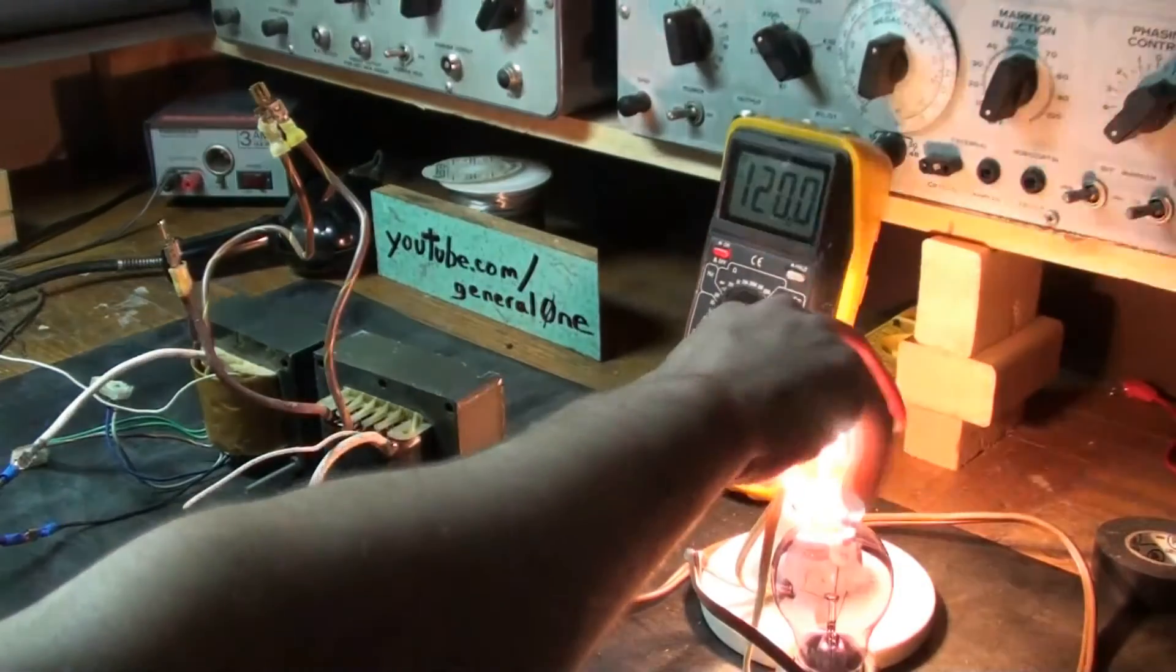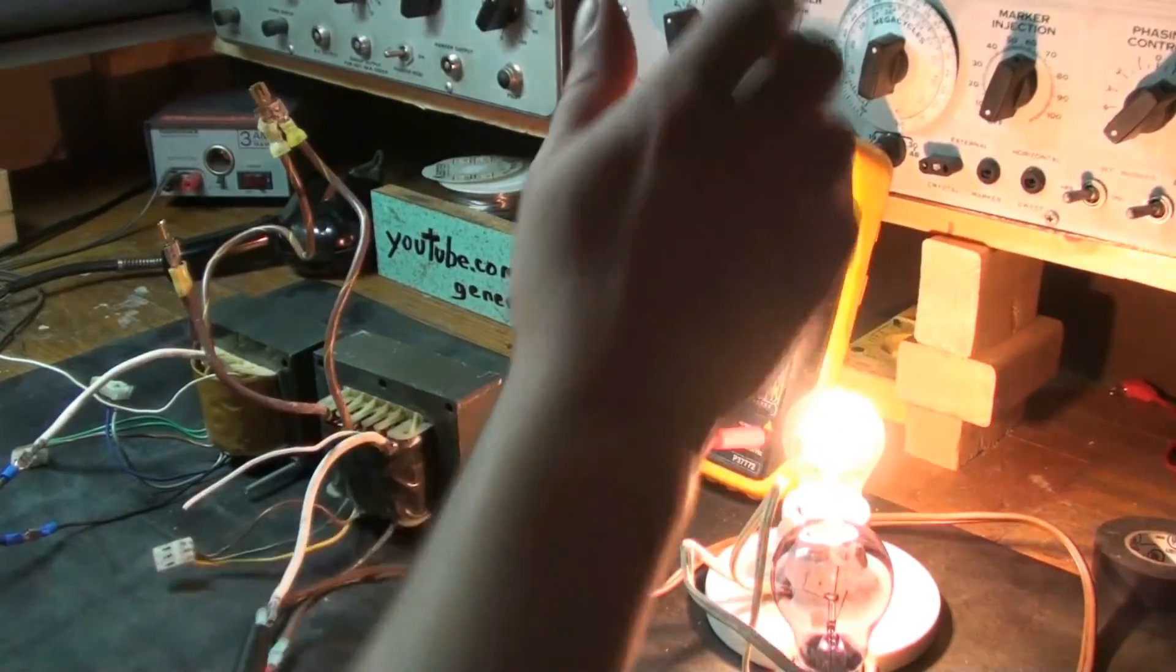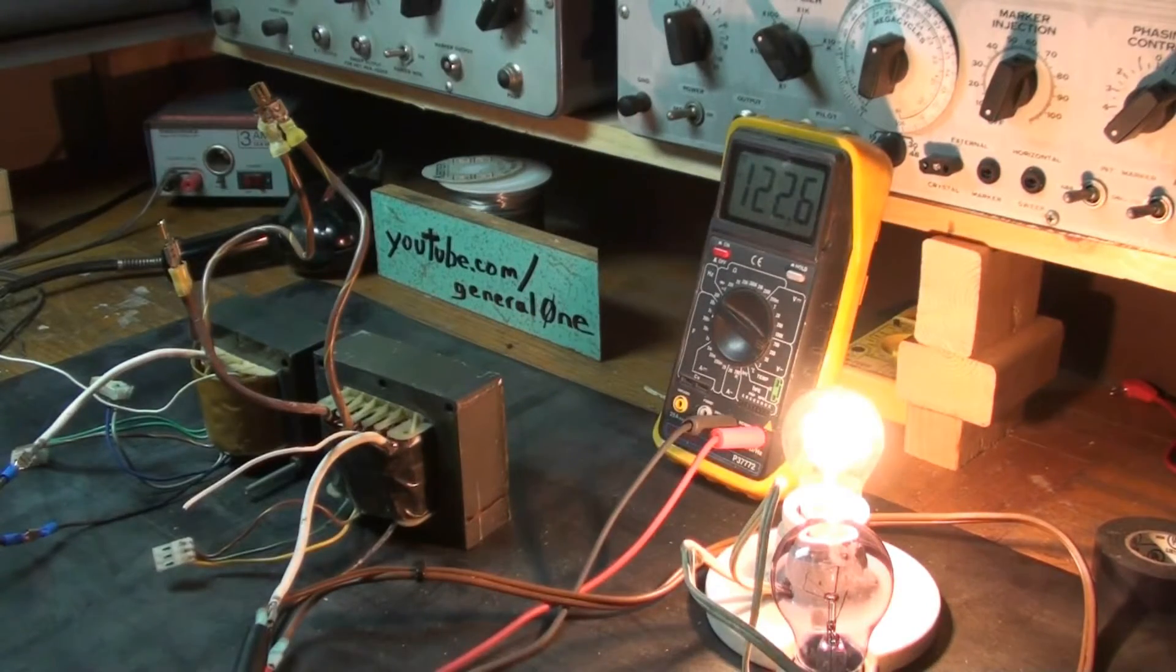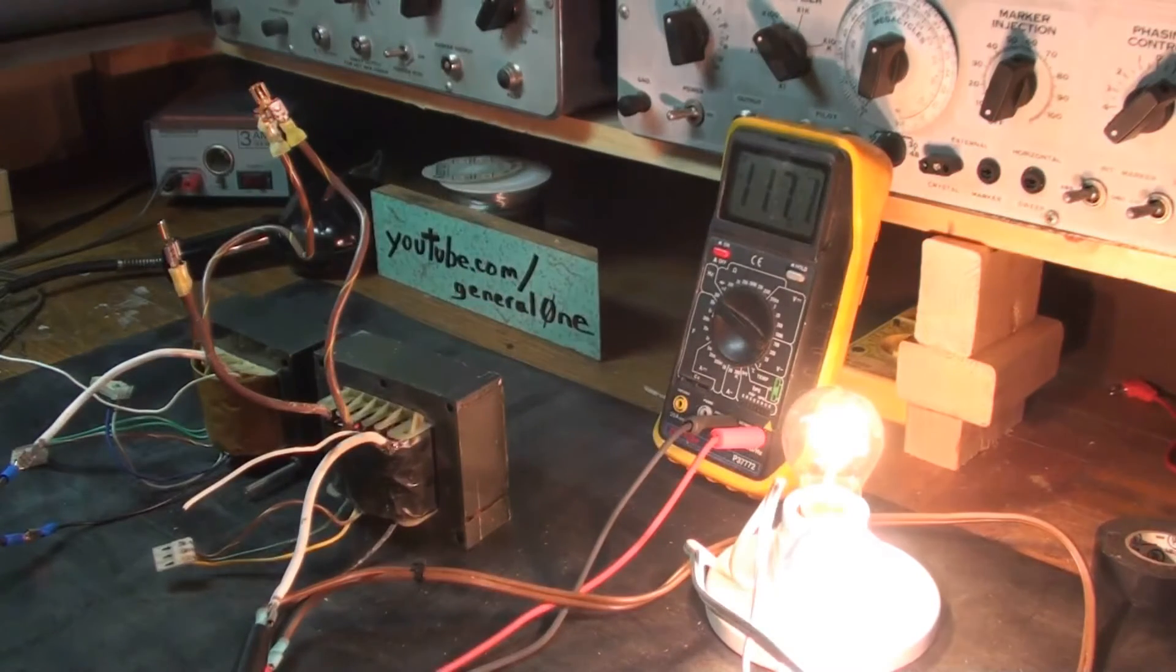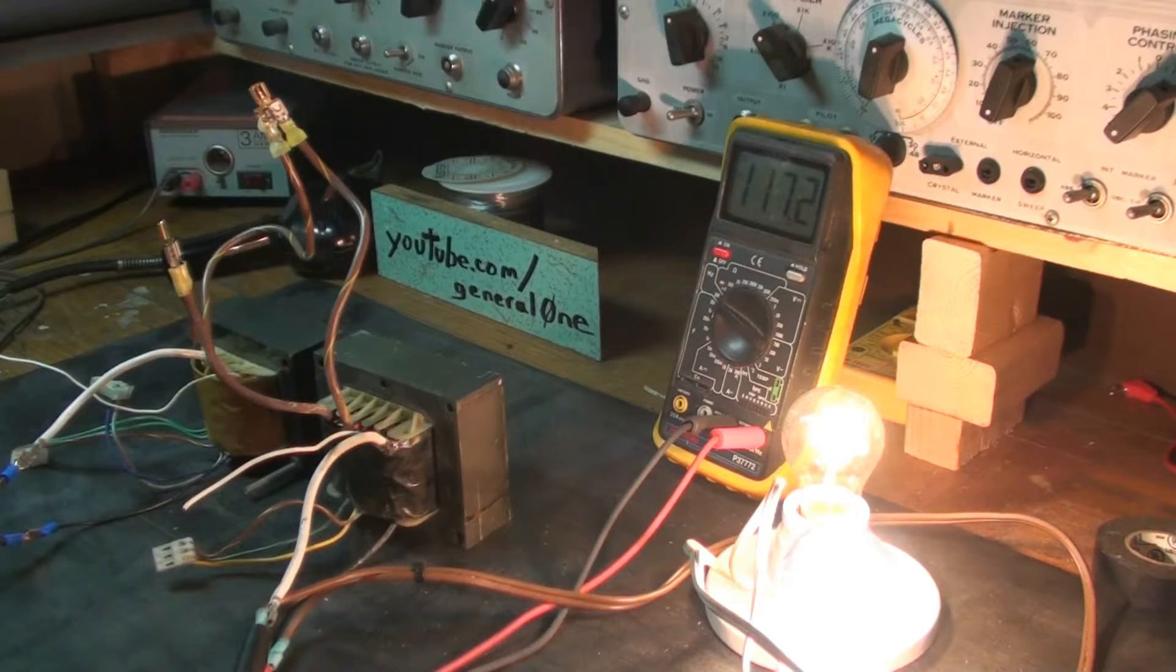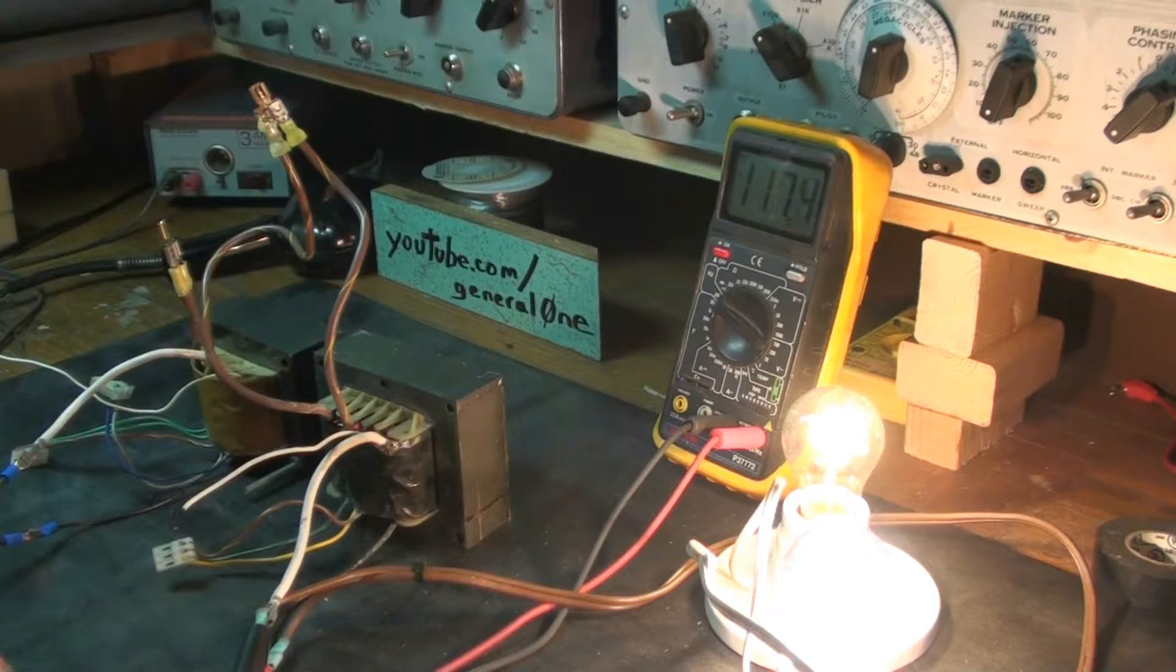Now let's screw in the 40 watt bulb - we're down to 122 volts. Screw in the 60 watt bulb and we're down to about 117 volts, between 117 and 118. It fluctuates a bit - again, that could be the meter.